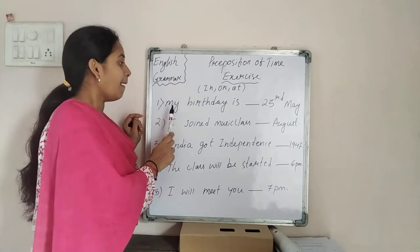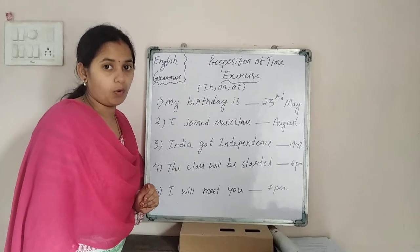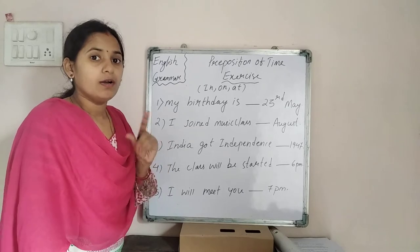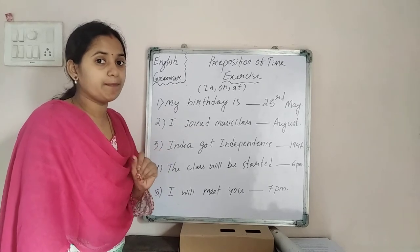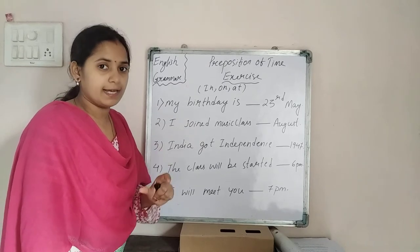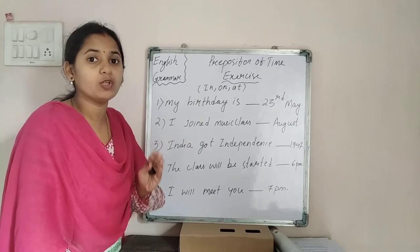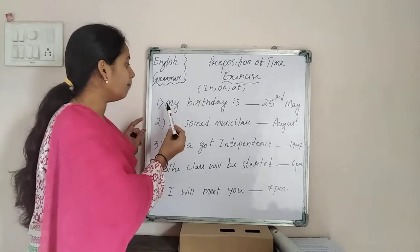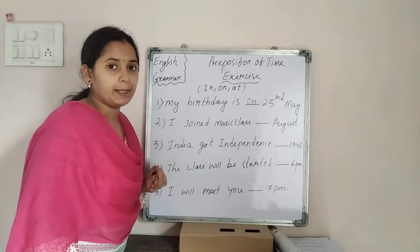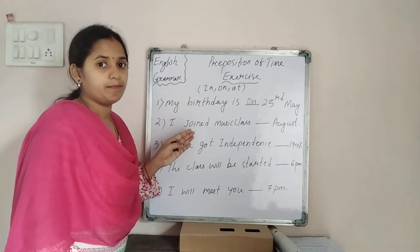The first question is: my birthday is dash 23rd May. Which is the correct preposition? This is a date, so before a date we have to use on. So the answer is: my birthday is on 23rd May. On is the correct preposition.